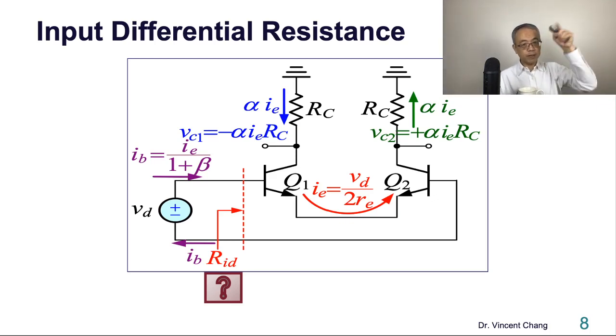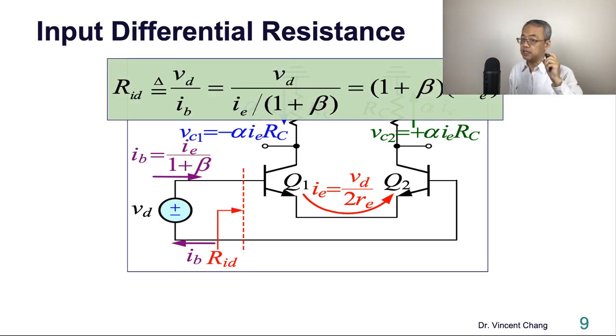And looking into base, it's defined as input and looking into base. So it's the base perspective. It's the base perspective, not emitter perspective anymore. It's the base perspective. So it's simple. Why? Just resistance refraction rule.